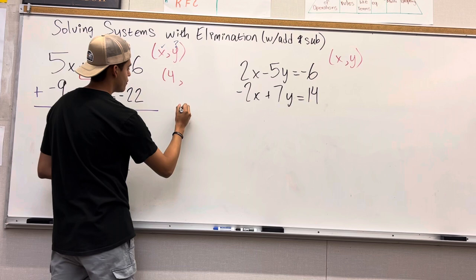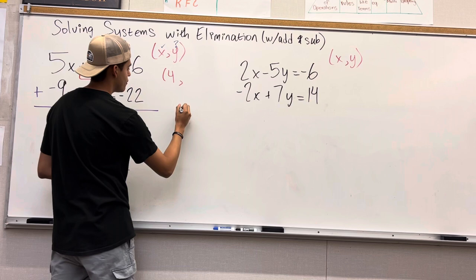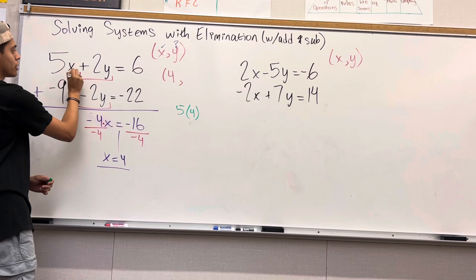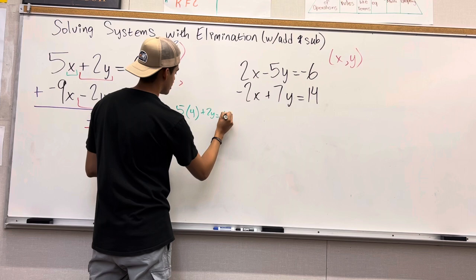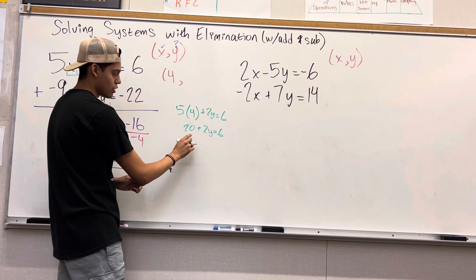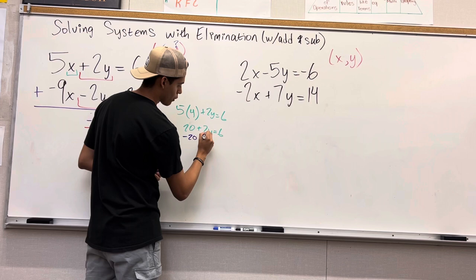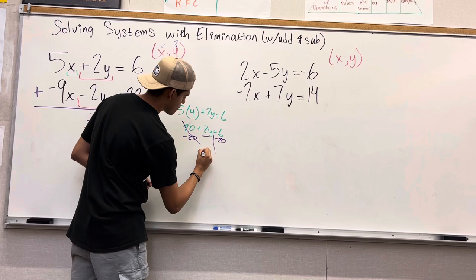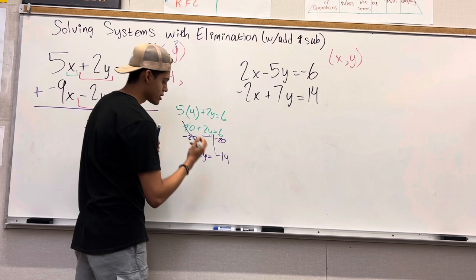We have 5 times this 4 because that is what x is. We are going to be replacing it in here. 5 times 4 plus 2y equals 6. 5 times 4 is 20 plus 2y equals 6. We are going to subtract 20 to both sides because we are solving for y.